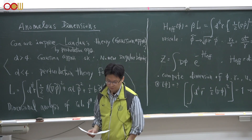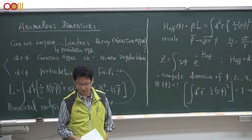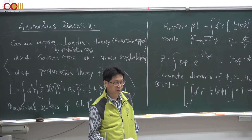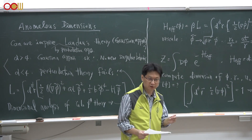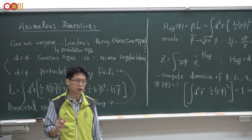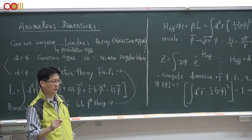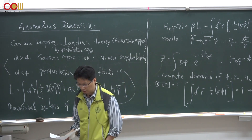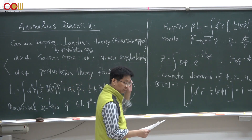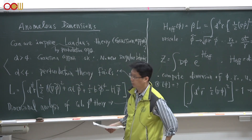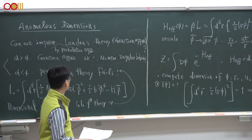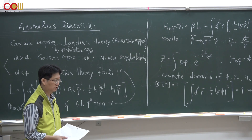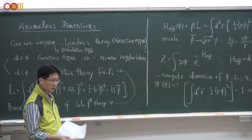We started a new chapter today which is about anomalous dimensions in Landau theory. Previously we showed that the Landau theory fails within the critical regime where this little t approaches 0, especially when dimensions are less than the upper critical dimension 4. In this chapter we ask a very naive question: can we improve this Landau theory, especially the Gaussian approximated Landau free energy functional, by perturbation theory?